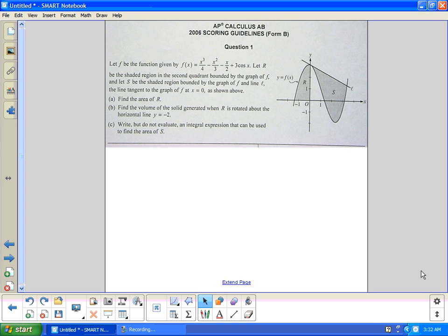2006 scoring of question one from Form B. You have a function defined as f of x and you have a region R shaded that is bounded by the x-axis and the y-axis shown in the picture. And then you have a shaded region S that's bounded by the graph f and the line L which is tangent to the graph of f at zero as shown above. So L is a tangent line to f of x at zero going through that y-intercept.